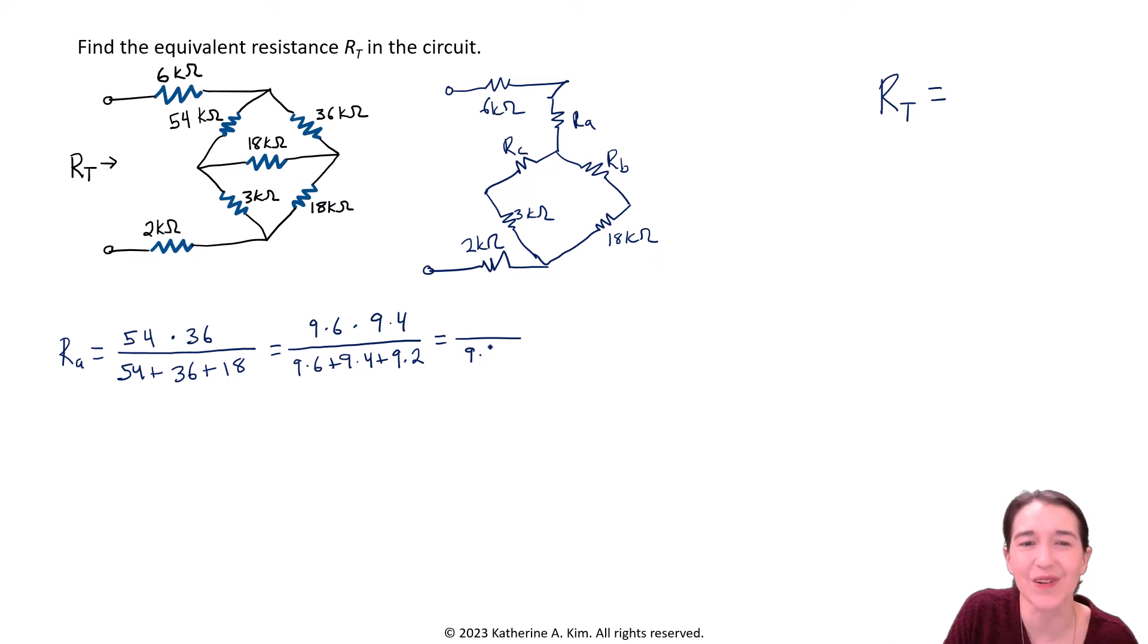So we could factor that 12 into 4 and 3. So we'll just go with that notation for now. And then on the top, we would have a 9, a 9, a 4, and I'll even factor the 6 into 2 and 3. When we write it like this, we see that we get some nice cancellations here. And so what we're left with is 18. And remember, we're in kilo-ohms. So the value of RA is 18 kilo-ohms. Beautiful.